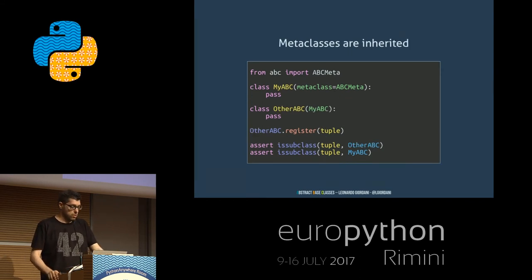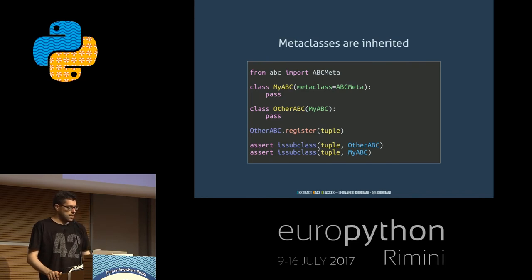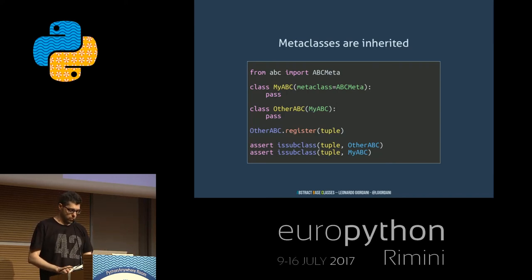You inherit the meta-class. I define my_ABC with ABCMeta, then other_ABC inheriting from my_ABC — and I can use other_ABC just like I used my_ABC. So inheritance works here. It's important.